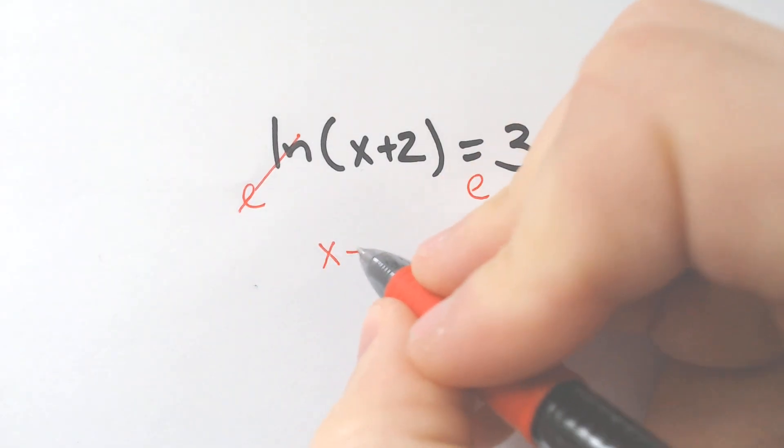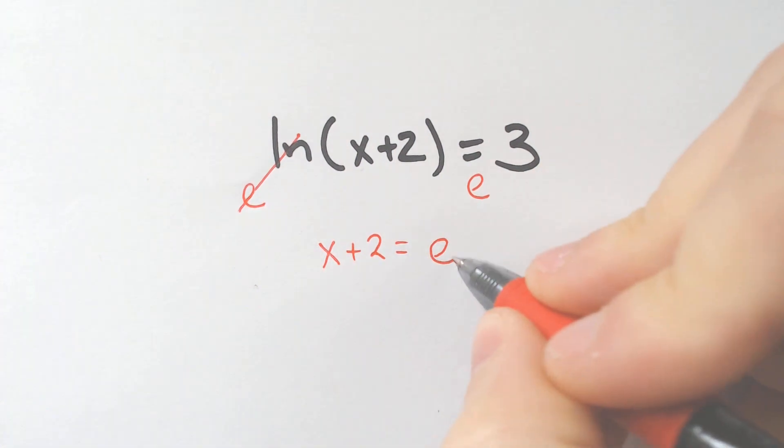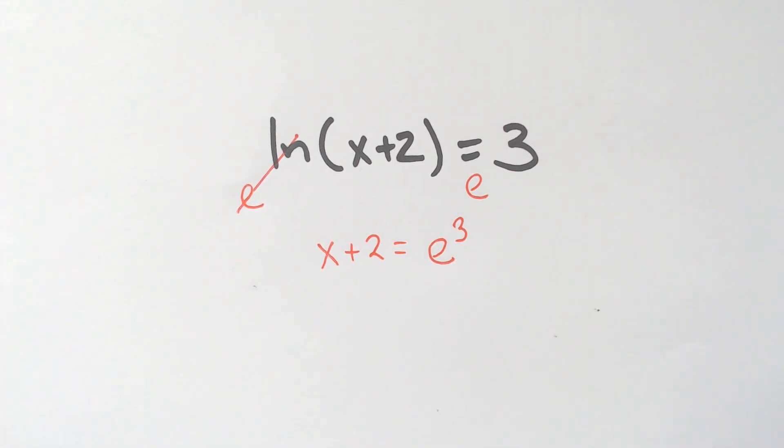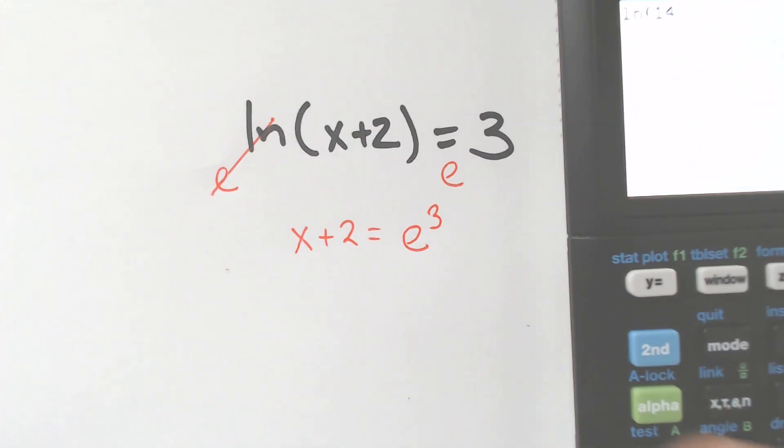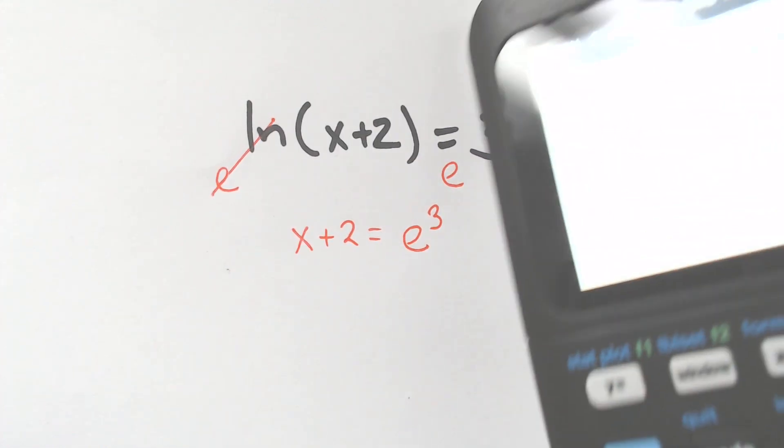And the E to the LN would cancel, leaving us with X plus 2 is equal to E to the third power. Now, if you're wondering if you're going to forget that it's E to the third power, not 3 times E,